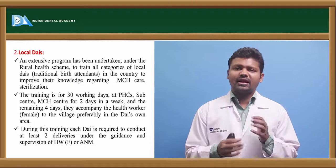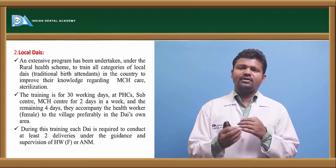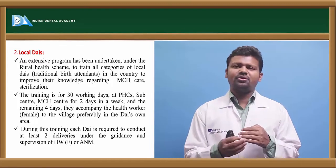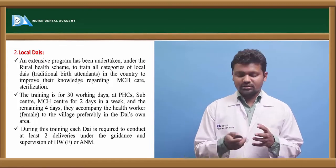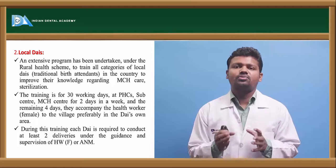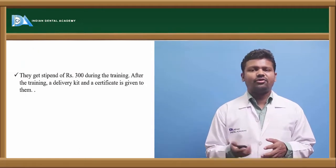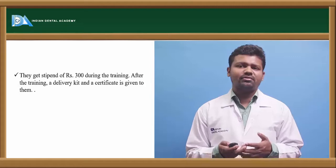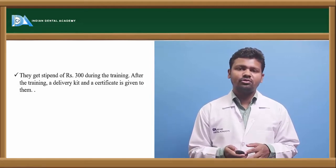Trained dais are local delivery women present in every rural area. The government has made training centers for them so that, with the help of PHC, they can be trained in easy and safe delivery methods. They have to conduct two or three deliveries before they are trained. During the training course, they are provided a stipend of 300 rupees. After training, a delivery test and certificate is given.